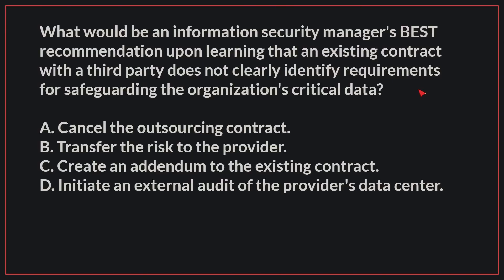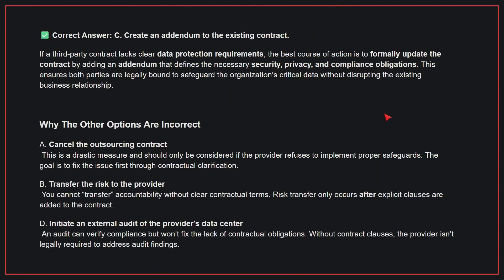What would be an information security manager's best recommendation upon learning that an existing contract with a third party does not clearly identify requirements for safeguarding the organization's critical data? The correct answer is C: create an addendum to the existing contract. If a third-party contract lacks clear data protection requirements, the best course of action is to formally update the contract by adding an addendum that defines the necessary security, privacy, and compliance obligations.